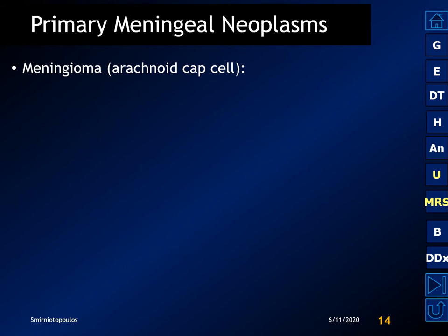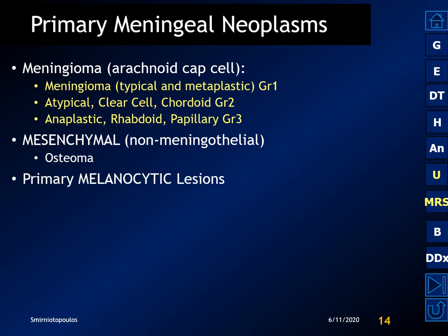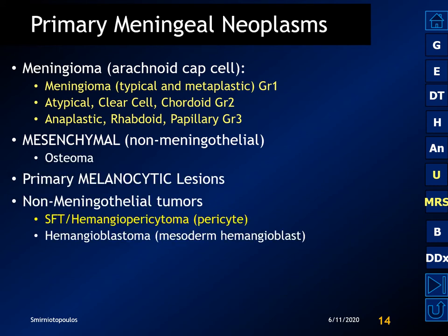When we think about primary meningeal neoplasms, we think about meningiomas, which arise from arachnoidal capsules. We can also have non-meningothelial mesenchymal tumors that may resemble cartilage or bone, pigmented lesions, and non-meningothelial tumors like solitary fibrous tumor and hemangioblastoma.